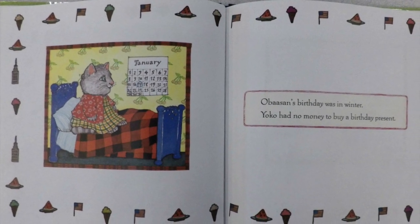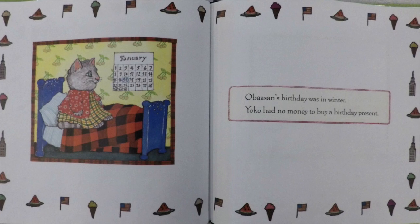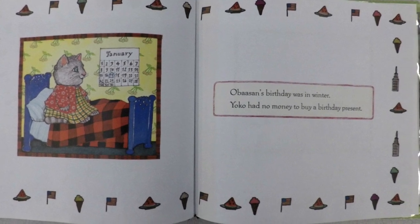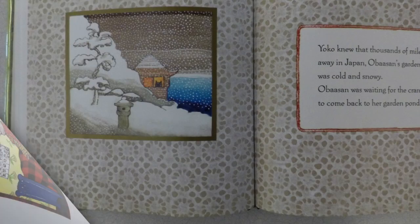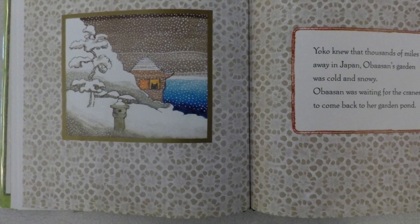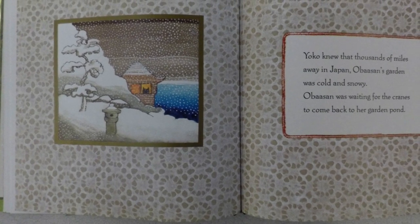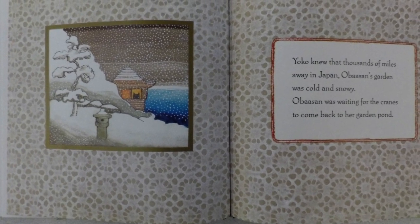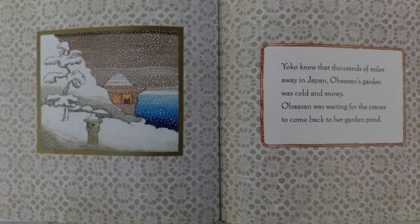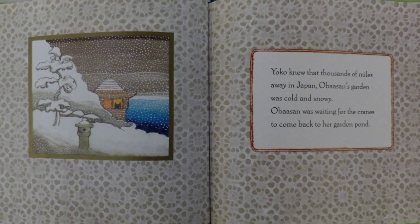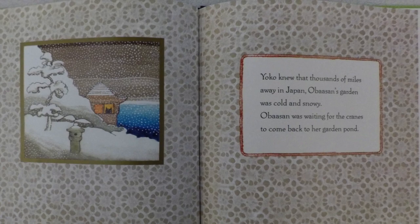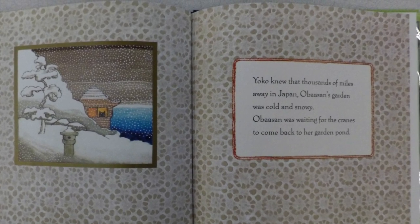Obasan's birthday was in winter. Yoko had no money to buy a birthday present. Yoko knew that thousands of miles away in Japan, Obasan's garden was cold and snowy. Obasan was waiting for the cranes to come back to her garden pond.